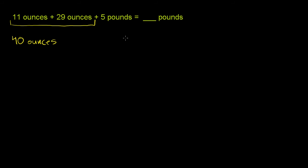So 40 ounces, we want to convert it to pounds. We need to multiply it by something where in the units we have ounces in the denominator and pounds in the numerator. We need that so the ounces cancel out and we're just left with pounds.